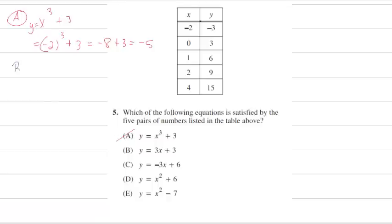Let's try B. B is Y equals 3X plus 3. When I plug in negative 2, 3 times negative 2 plus 3, I should get negative 3 for my Y. That's negative 6 plus 3, which is negative 3. So far, choice B is looking good.